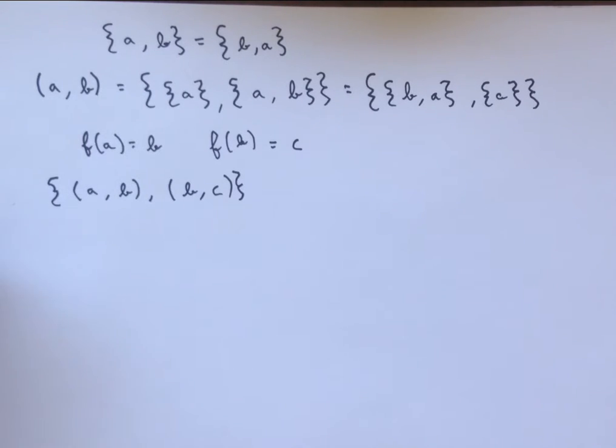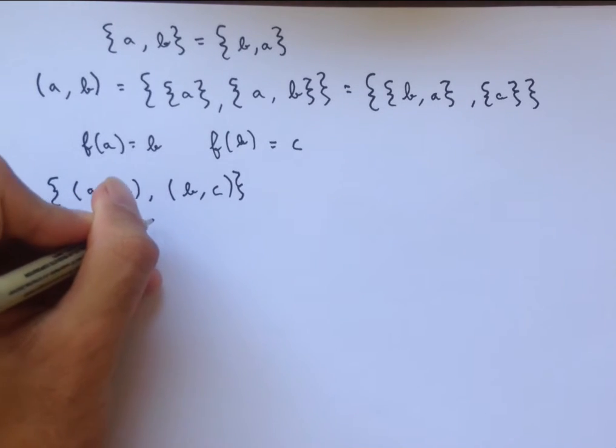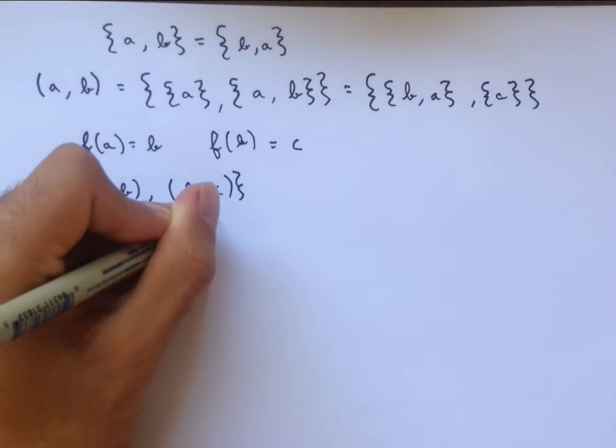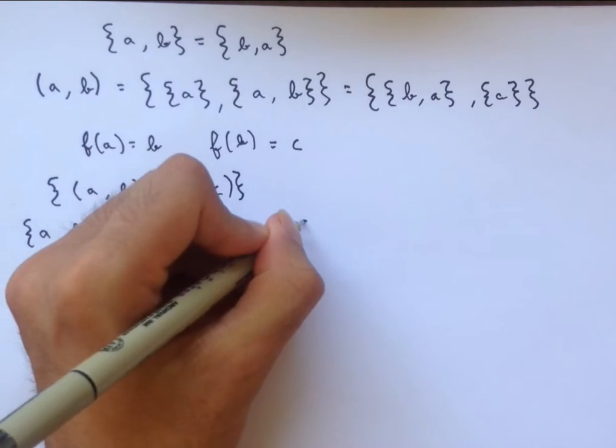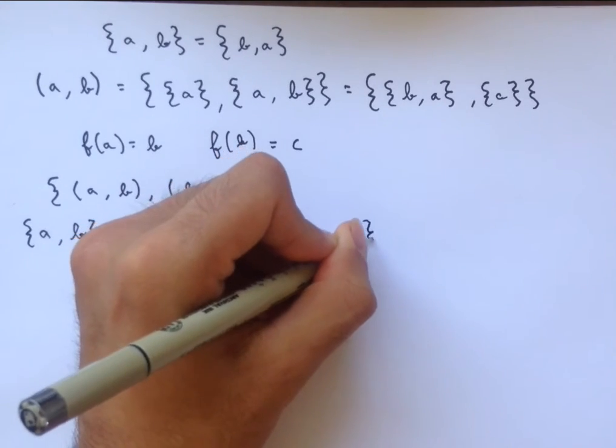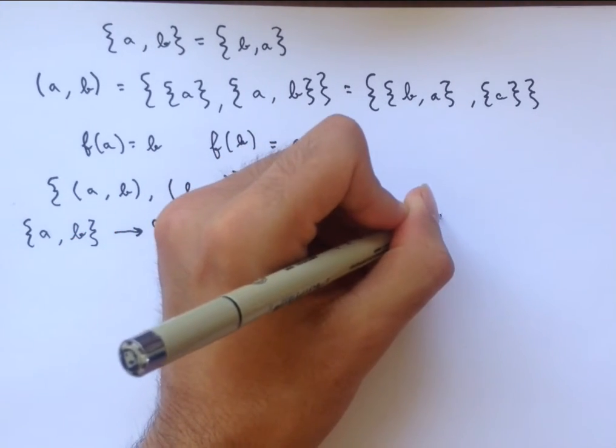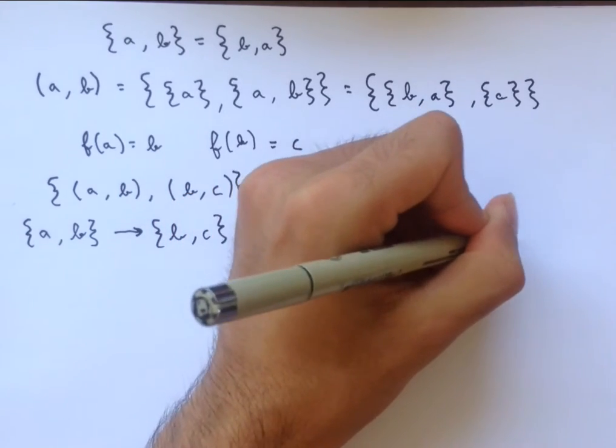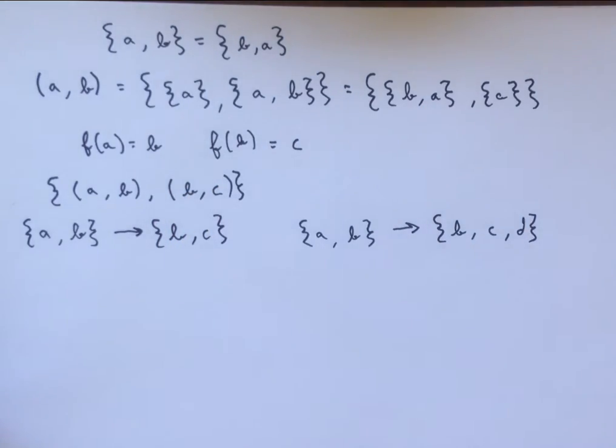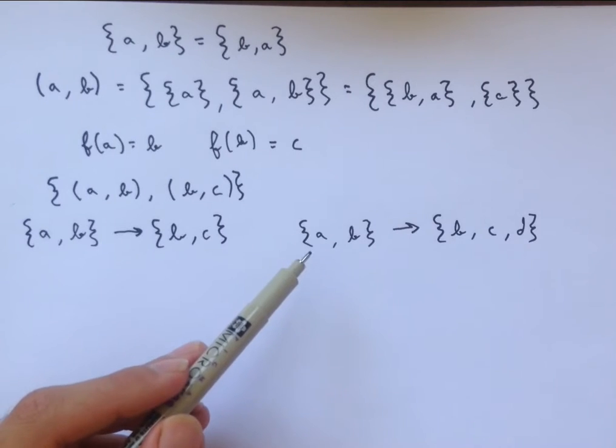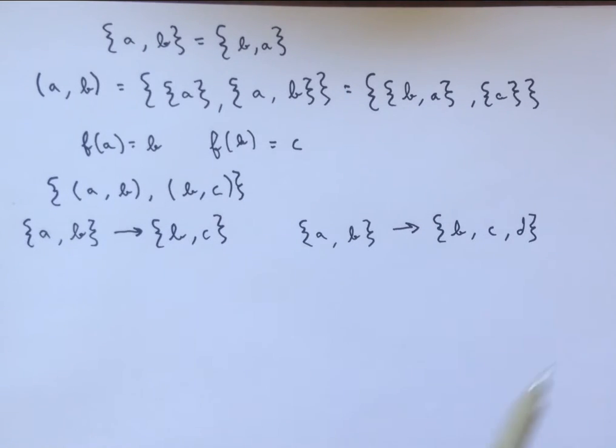And so now that we're talking about functions, let's go into a bit more detail about some types of functions that exist. So this function is a function from the set A, B to the set B, C. But it's also a function from the set A, B to the set B, C, and D. Even though there's no element that maps onto D, it's still every element of this set maps with F to some element of this set.